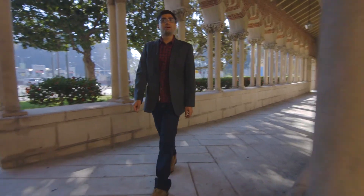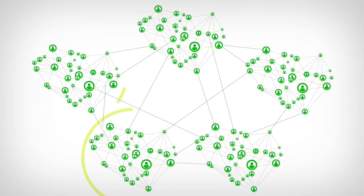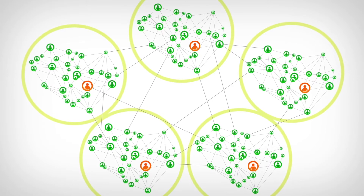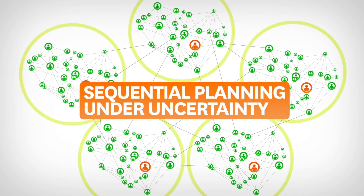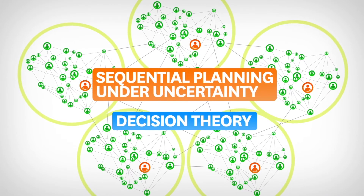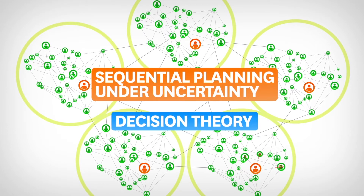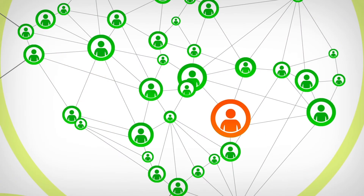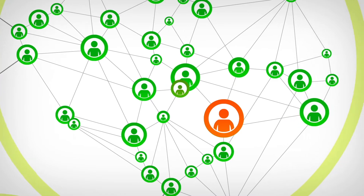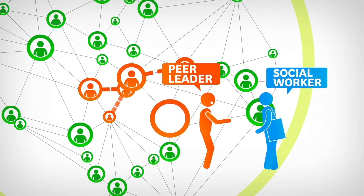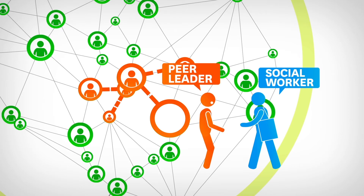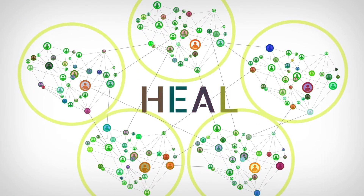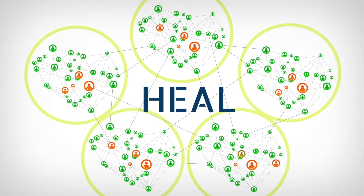How does the HEAL algorithm recommend the most influential peer leaders? HEAL partitions the social network to find closely connected communities and selects the best peer leader from each one. This best peer leader is chosen using state-of-the-art AI technologies like sequential planning under uncertainty and decision theory. In doing so, HEAL ensures that HIV education is not localized to one part of the social network but spreads widely over the entire population. Moreover, HEAL considers that the ideal peer leader not only spreads information effectively but also provides useful data about their social network structure. Thus, it weighs a peer leader's social influence against how much useful information they provide, helping improve peer leader selection in the next round. This process is repeated until we reach resource capacities.